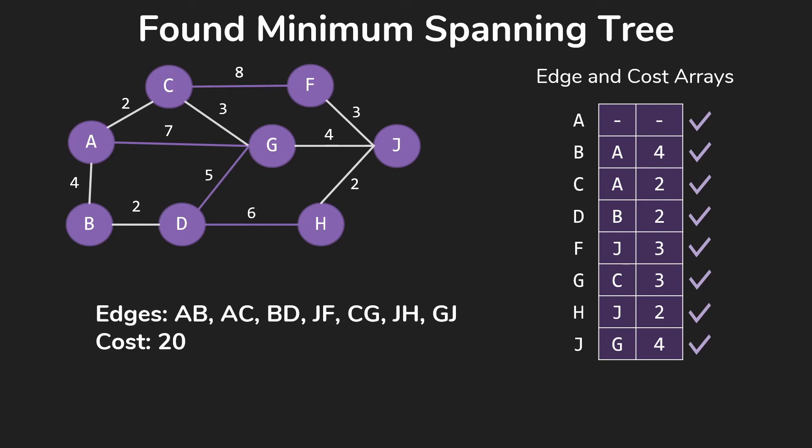So we found the minimum spanning tree we were looking for, which includes edges AB, AC, BD, JF, CG, JH, and GJ. And if we look at the total cost of those edges, it sums up to 20. That is our goal. We have our minimum spanning tree.